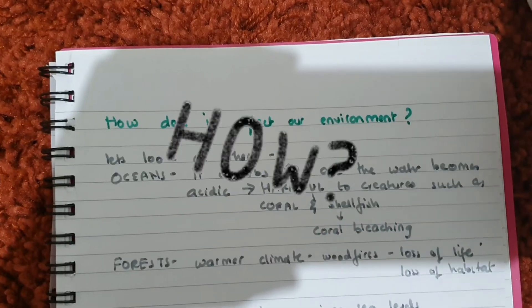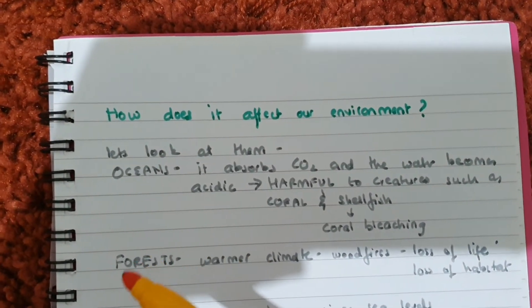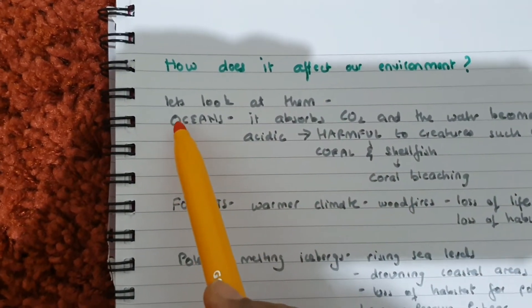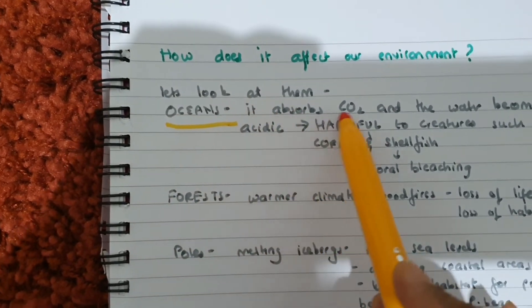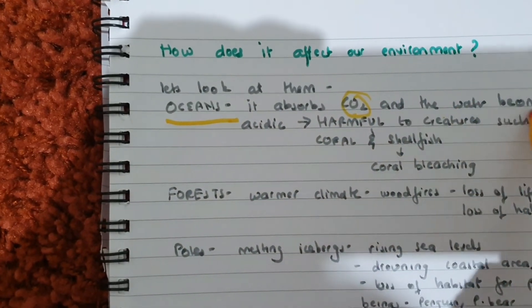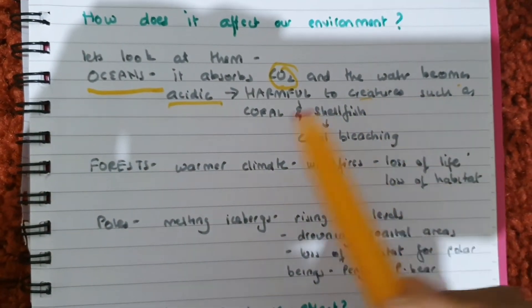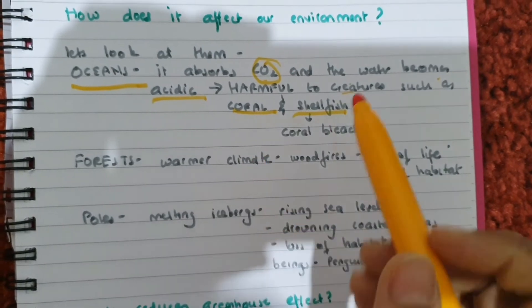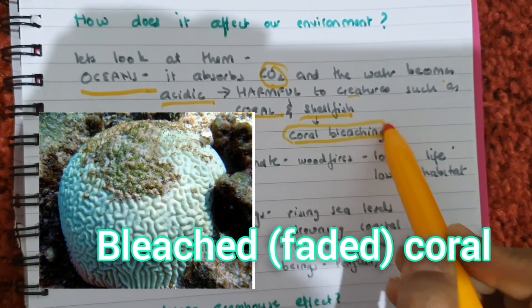So how does it affect our environment? We've done that in one of our episodes in this environment series. If we look at the oceans, the ocean water absorbs carbon dioxide and the water becomes acidic. This is harmful for creatures such as corals and shellfishes. The corals get bleached, and this is what is called coral bleaching.